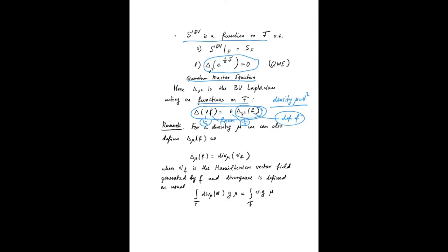Another way to define this Laplacian is just as a divergence of the Hamiltonian vector field generated by a function F. And the divergence is understood in the usual sense if you have a density μ, and then the integral of the divergence of the vector field against some function G is just the Lie derivative of this function G, integrated with respect to the density μ.